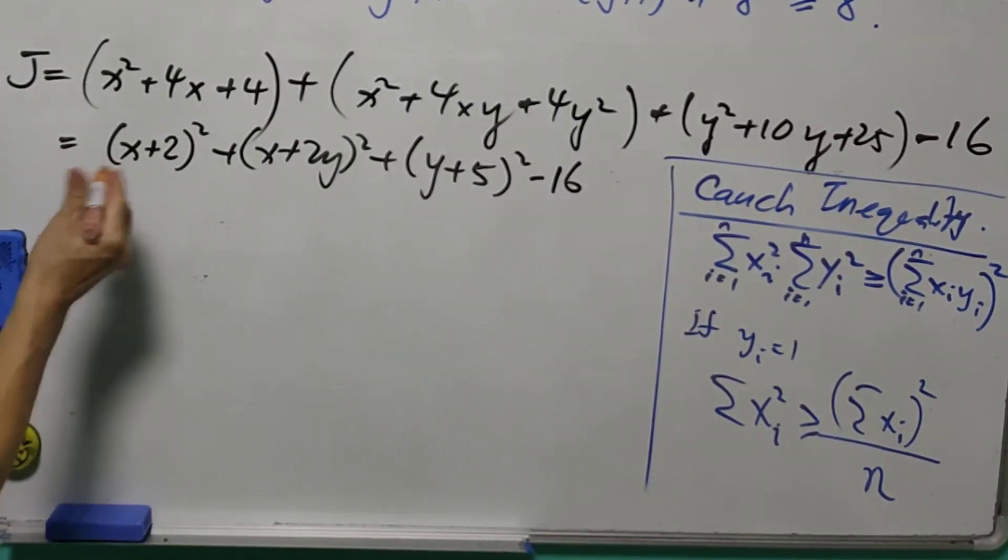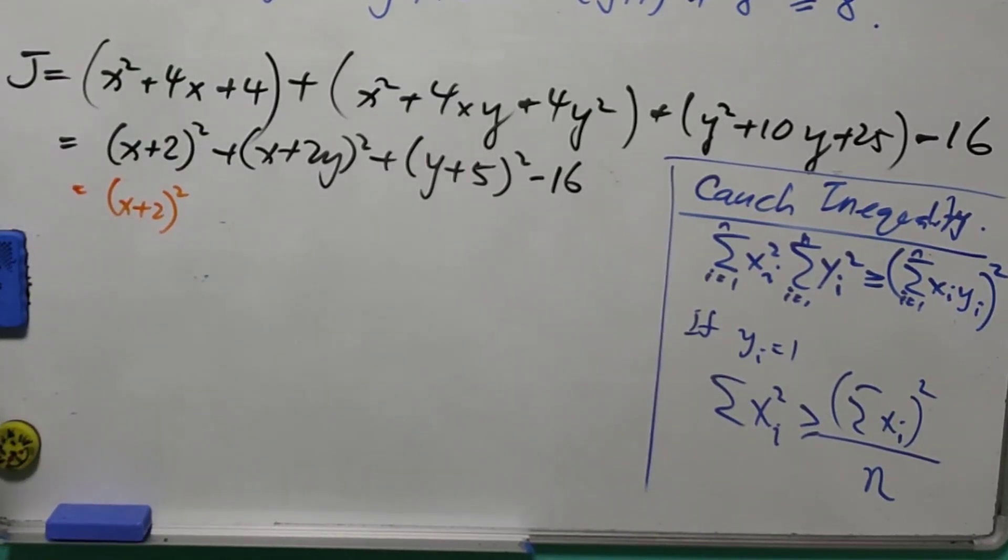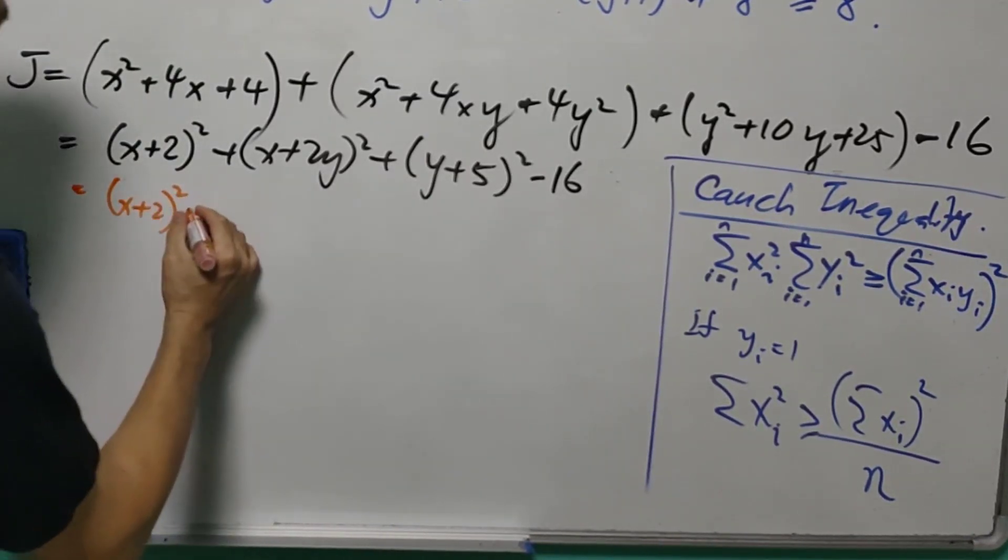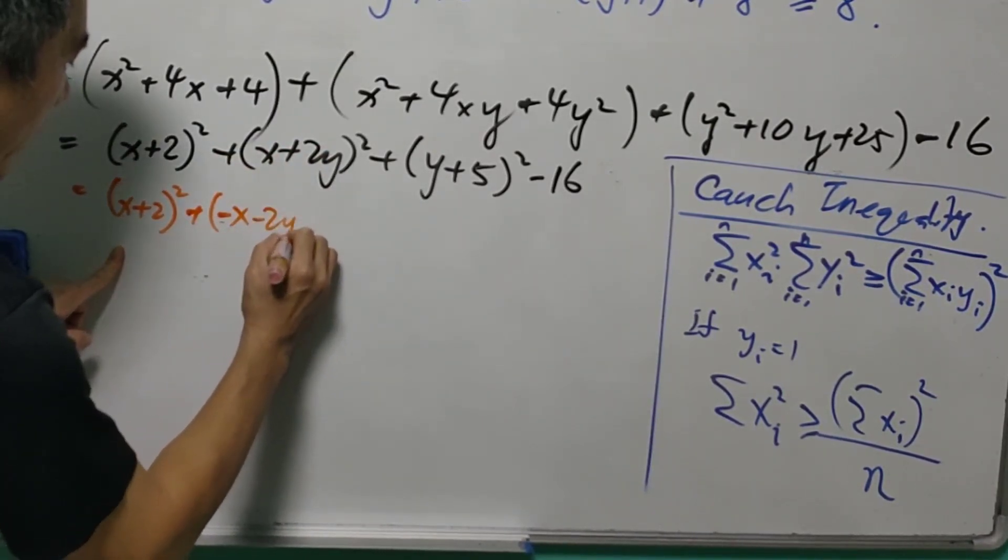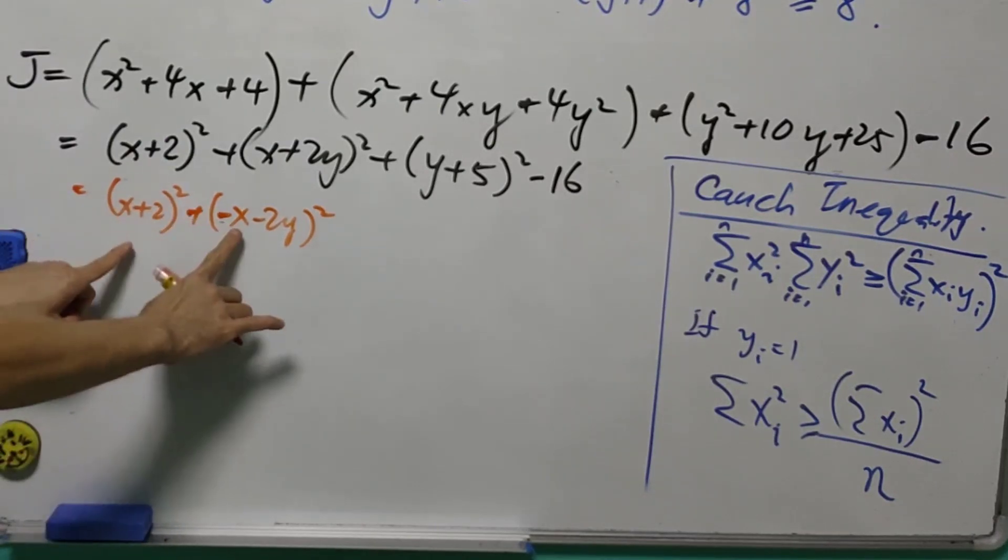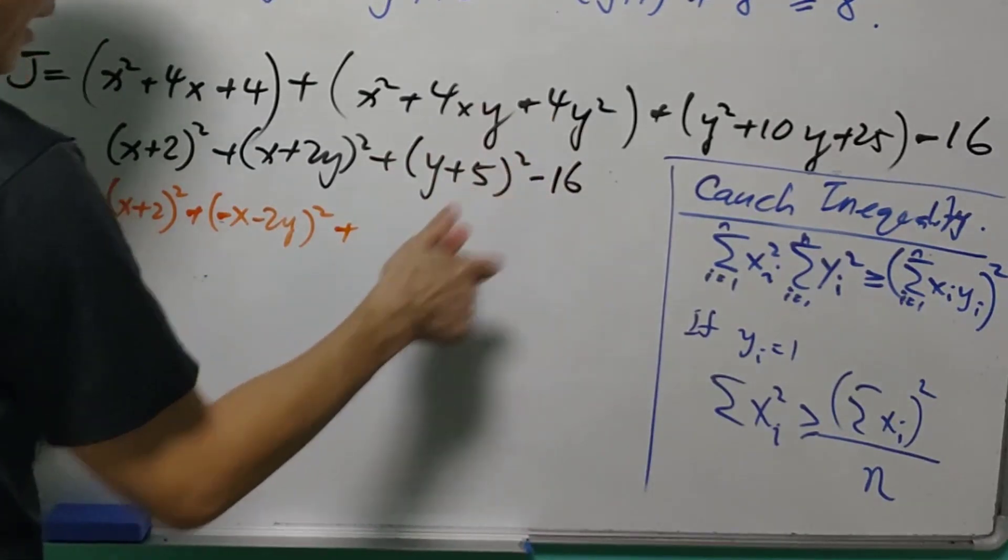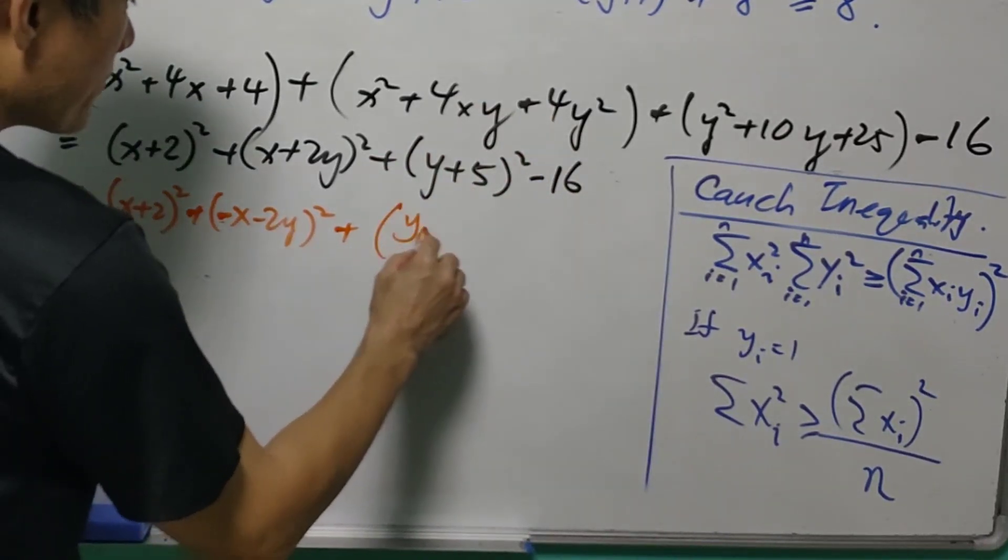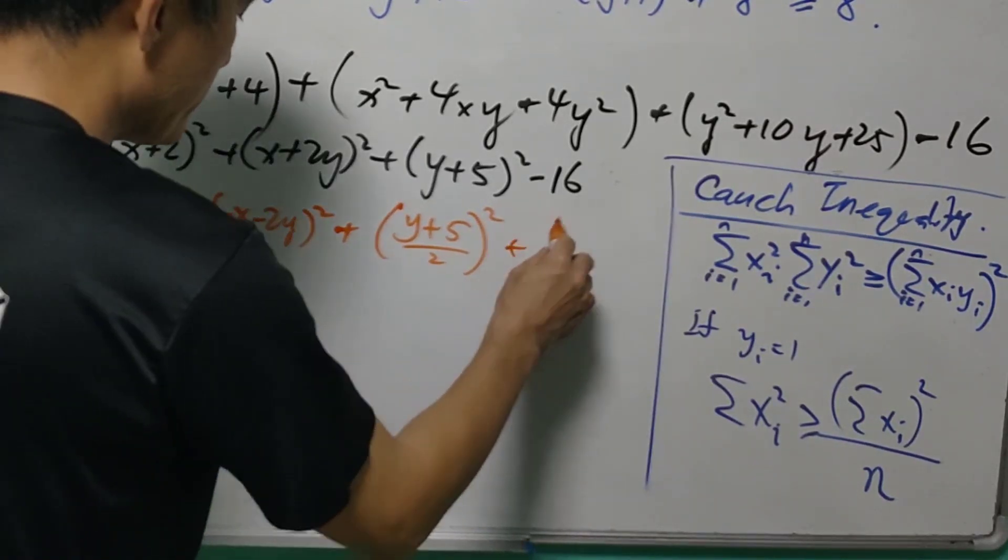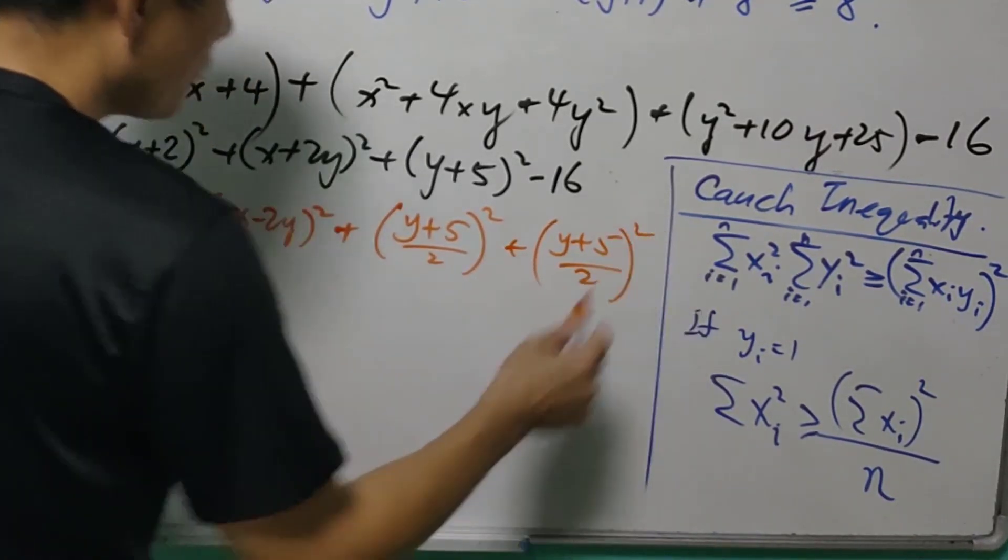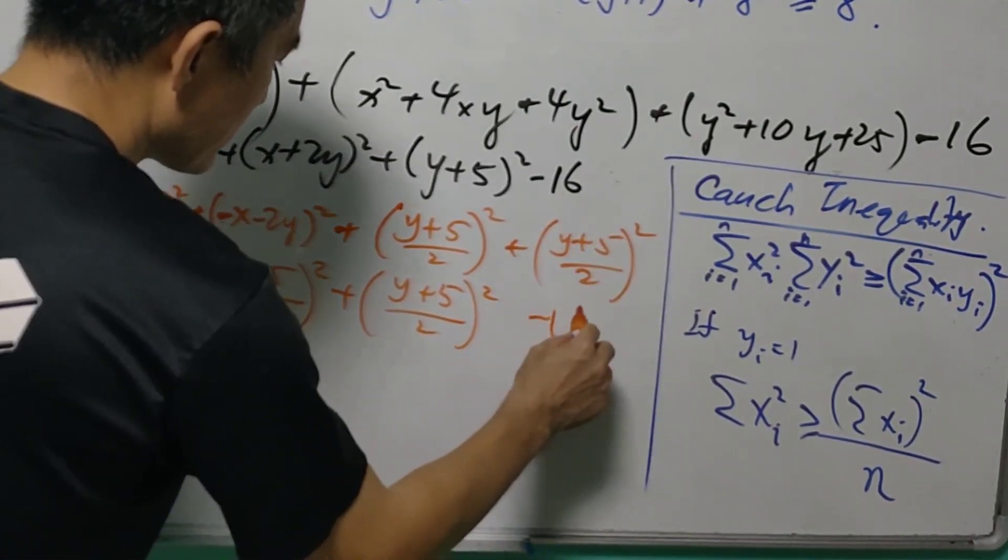Now looking at this, the first one is (x plus 2) squared. We are going to get rid of x and y. In order to do so, x plus 2y can be written as negative x minus 2y. So x will be this later on. And for (y plus 5) squared, I will write as (y plus 5 over 2) squared. But I need to write a total of 4 copies. And minus 16.